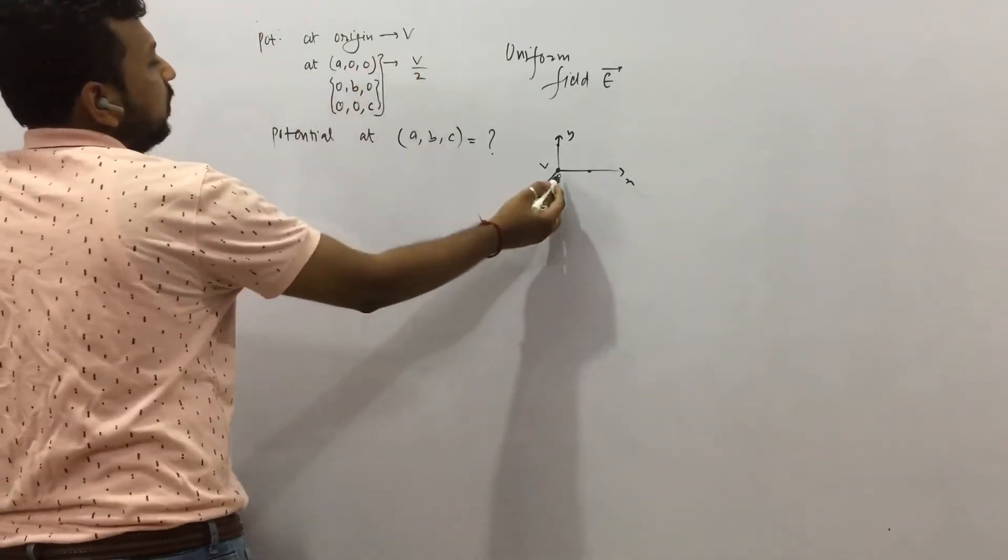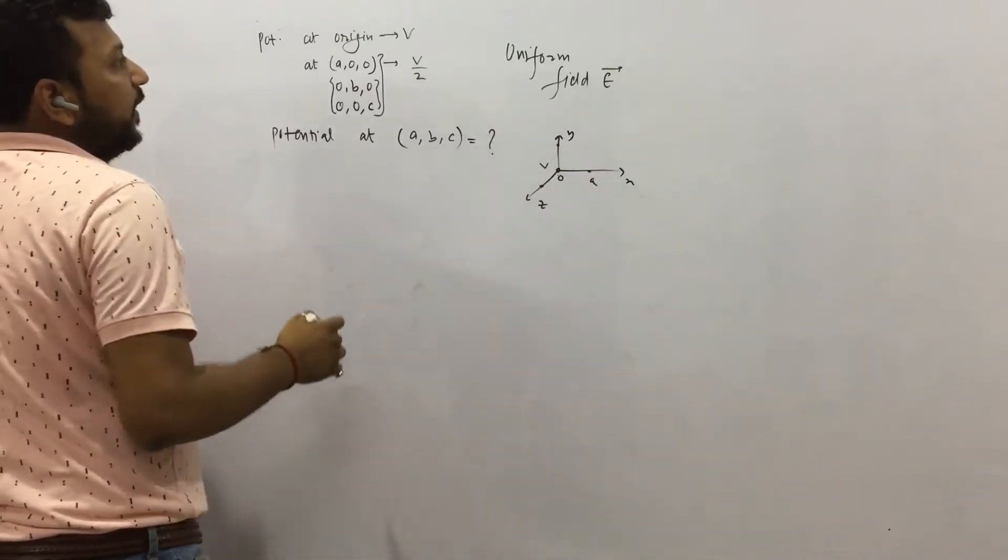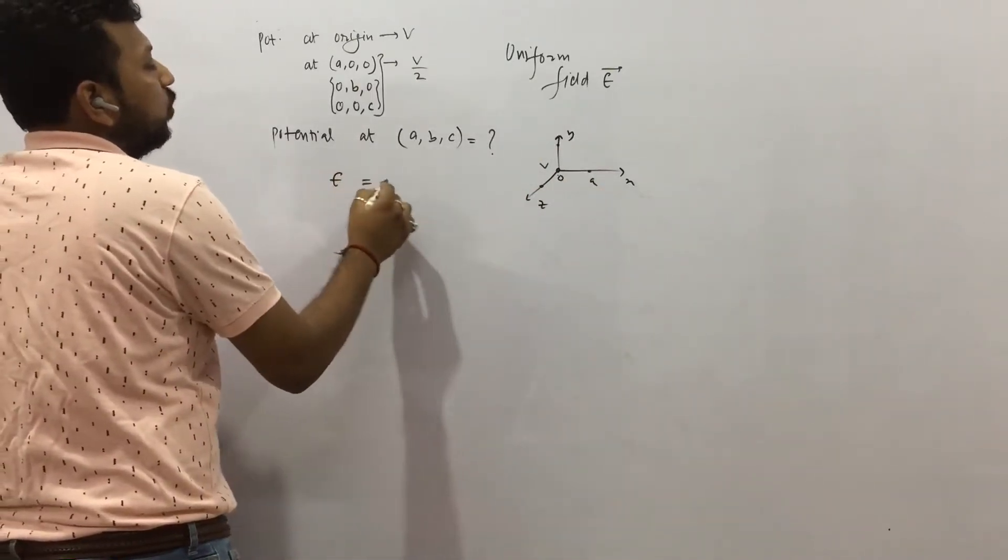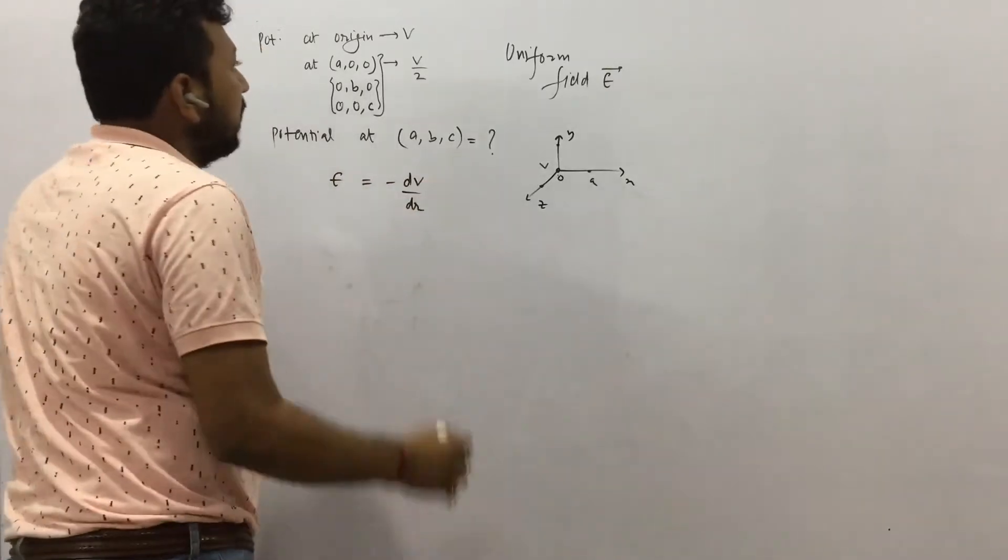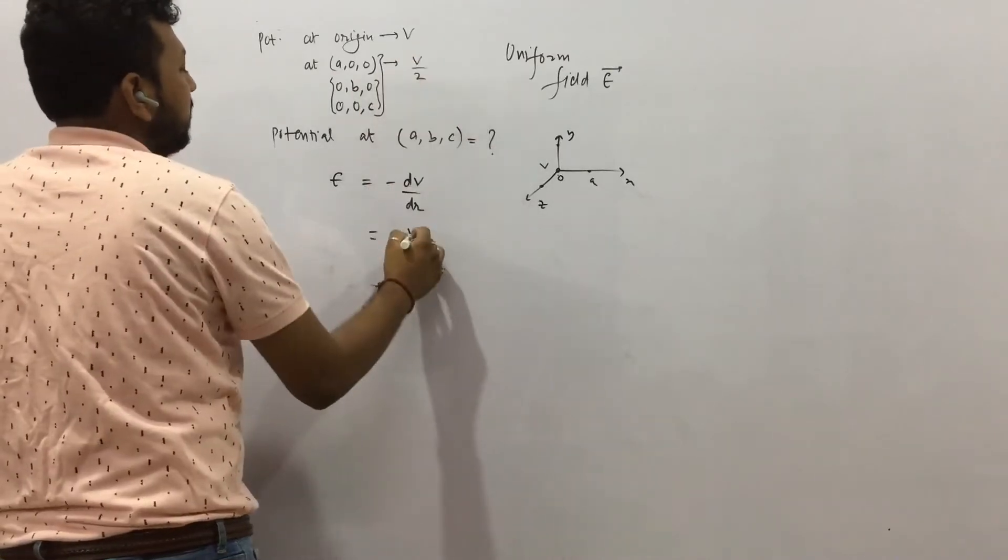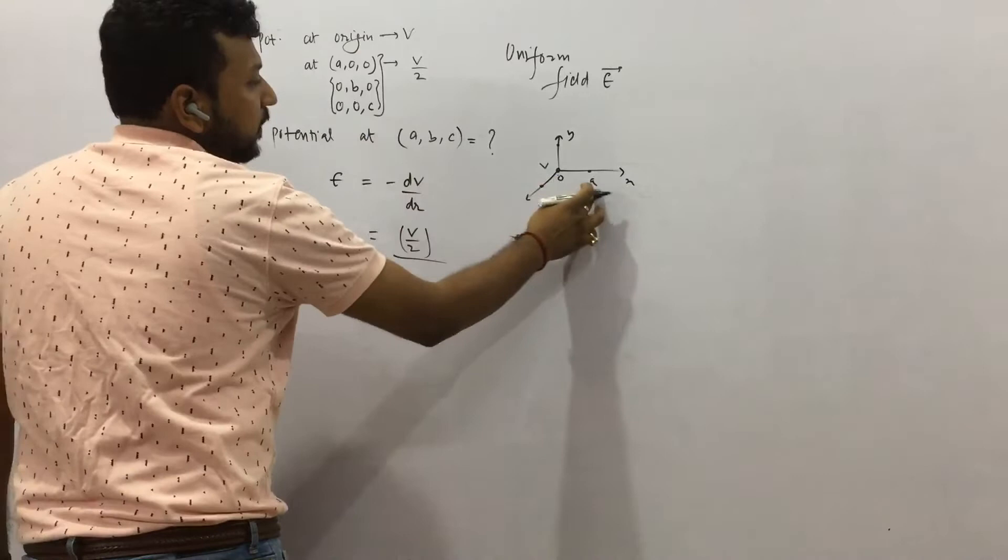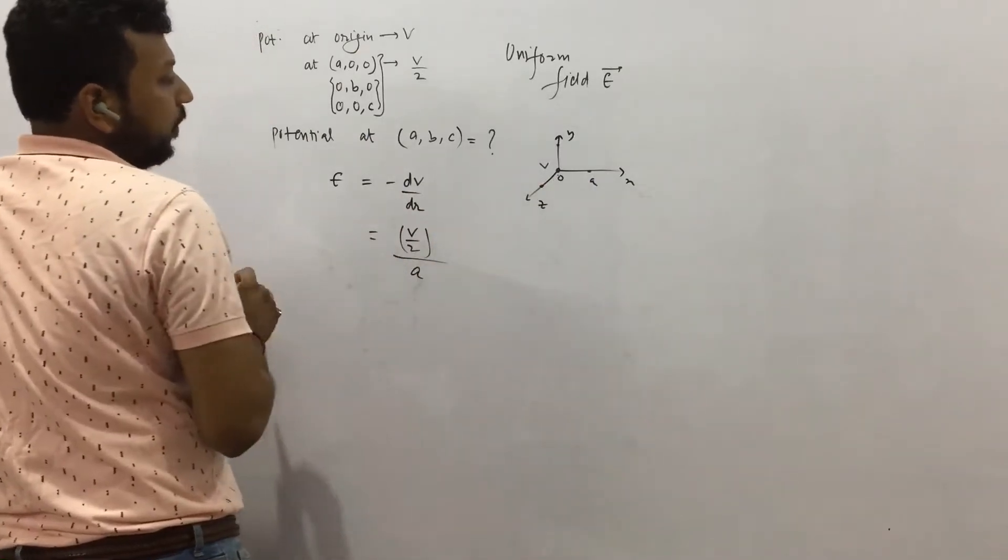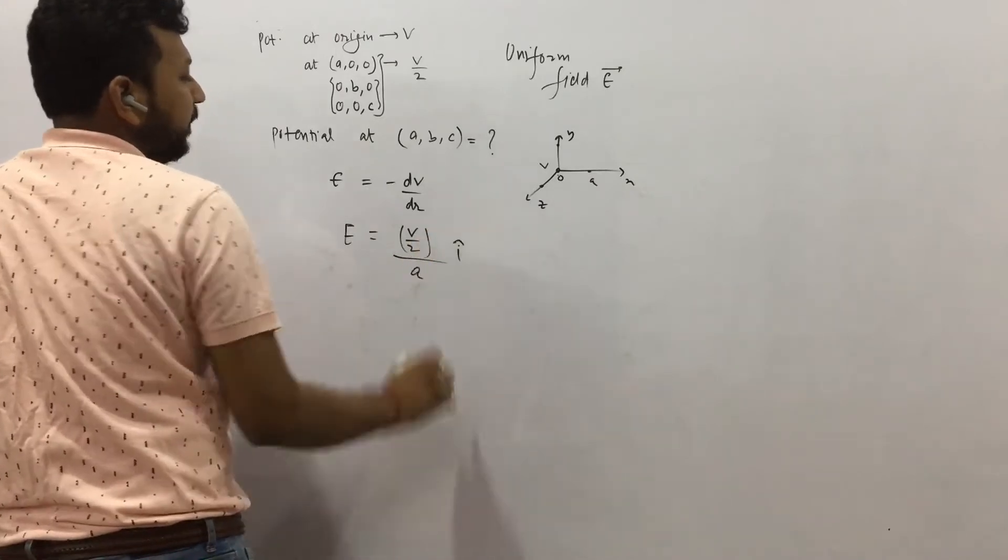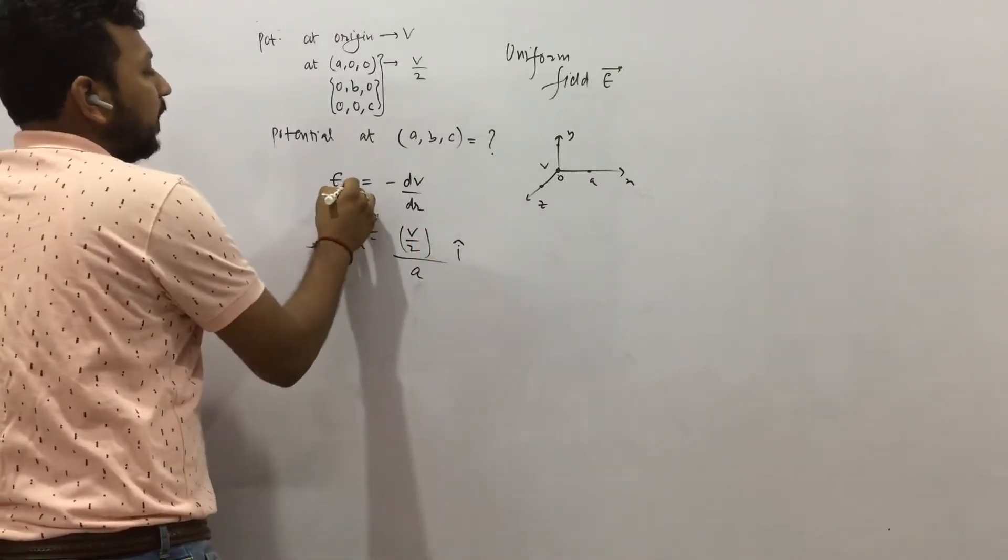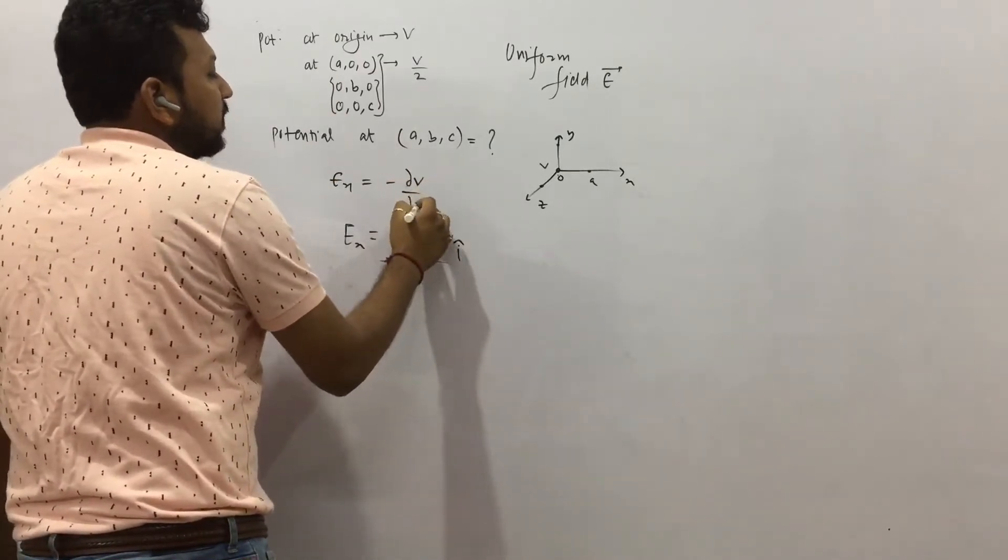Now see, if we go from (0,0,0) to A(a,0,0). We can say what? E equals to minus dV by dR. This we already wrote. Yes. So from here we can say the potential difference is V by 2 upon distance A. The distance is A. Okay? So electric field can be written as this, V by 2A, i cap. The x component of electric field.